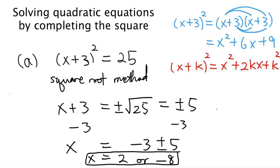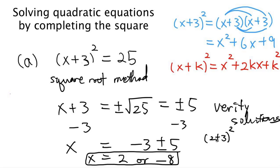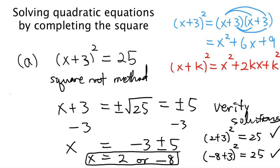Let's verify these two solutions. Suppose x equals 2: on the left hand side we have 2 plus 3, which is 5 squared, equals 25. That's correct. What about the second solution, x equals negative 8? We have negative 8 plus 3, which is negative 5. And negative 5 squared is positive 25. That's also correct.